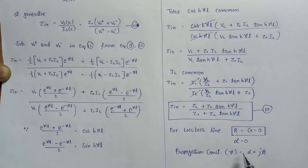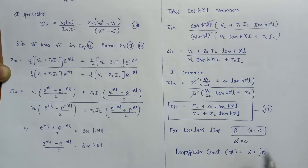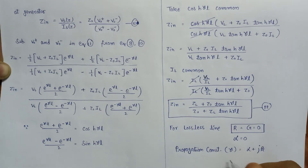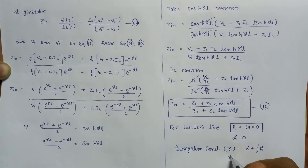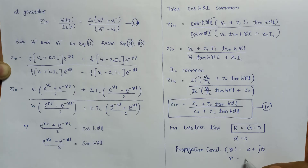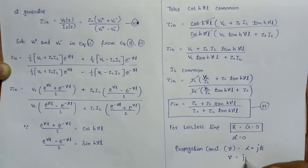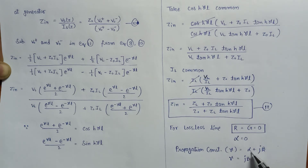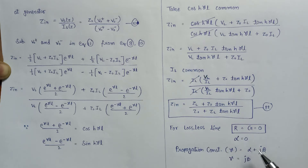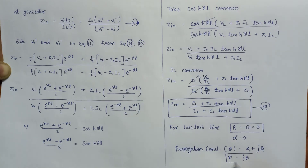On substituting the value of alpha equals zero in this expression, the value of gamma will become j beta only, because the attenuation constant for the lossless line alpha is equal to zero. That is why the value of gamma is equal to j beta only.